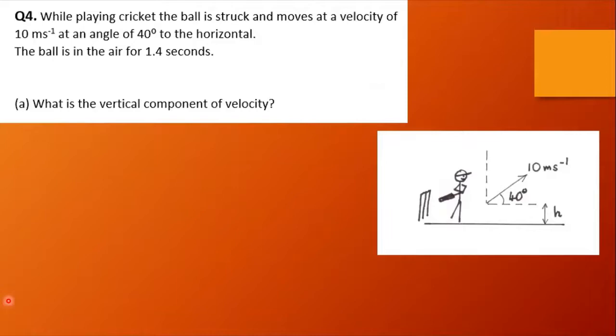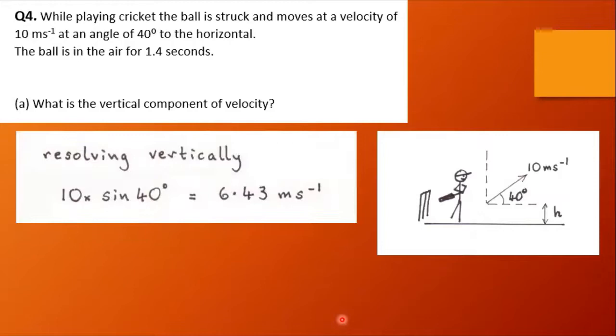Cricket, a great game, well for some people. While playing cricket the ball is struck and moves at a velocity of 10 meters per second at an angle of 40 degrees to the horizontal. The ball is in the air for a total of 1.4 seconds. What's the vertical component of the velocity? Remember, it's 10 times the cosine of the angle that we move through which is the sine of the other angle. So resolving vertically, 10 times sine 40 equals 6.43 ms^-1. We could round that to 6.4.